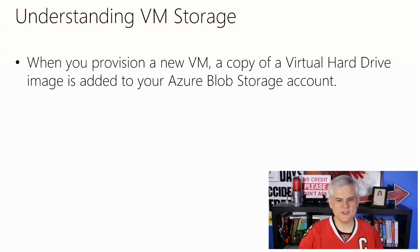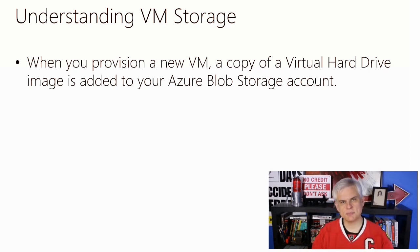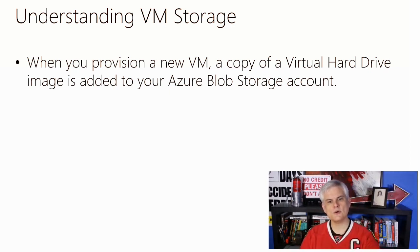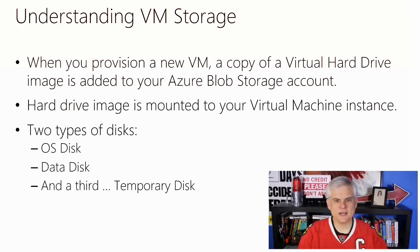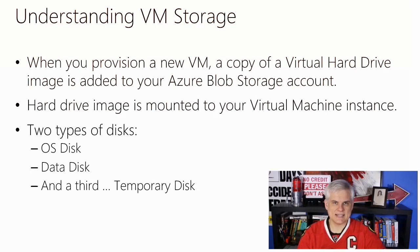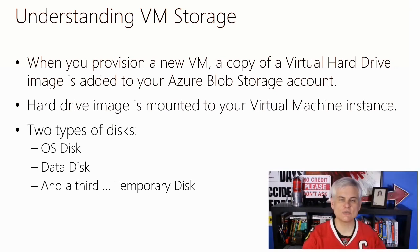Whenever you provision a virtual machine, you're really getting a copy of a virtual hard drive — one of several pre-configured virtual hard drives, or VHDs, called an image. The image is a template that's copied to a new virtual hard drive disk, and the disk is what your virtual machine boots up from. There are two types of persistent disks: an operating system disk, which holds the operating system and is persistent, and a data disk — which is really the preferred place for long-term data. Both are comprised of page blobs in Azure Storage, so you get all the advantages like high availability, durability, and geo-redundancy.